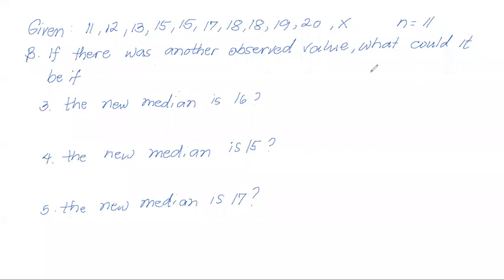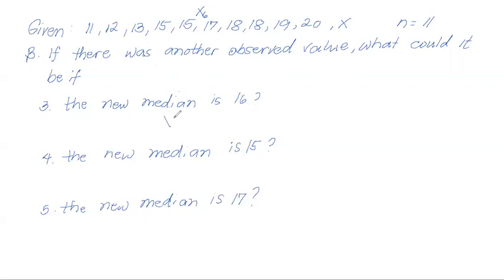Now, instead of the mean, what if the new median is 16? If our number of observations is 11, which is odd, there will be only one middle value. That middle value is the 6th observation since (11+1)/2 = 6. So the 6th observation is our median. The only way 16 will be the middle value is if that observed value is 16.